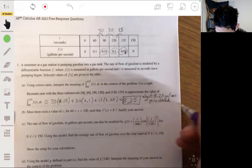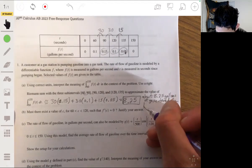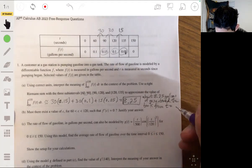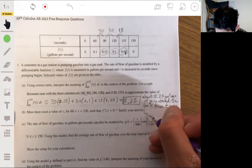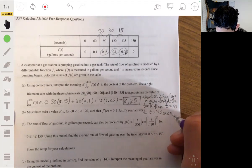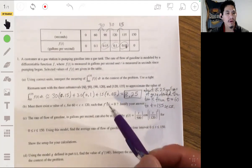And what this is saying is that about 8.25 gallons of gasoline enters the tank from 60 to 135 seconds. Trying to squeeze it in here, enter the tank from t equals 60 to t equals 135 seconds.